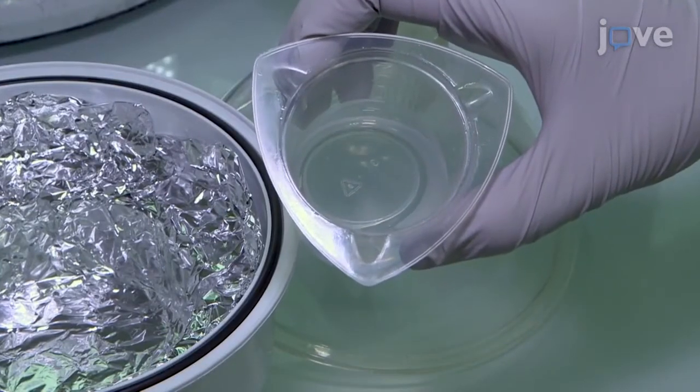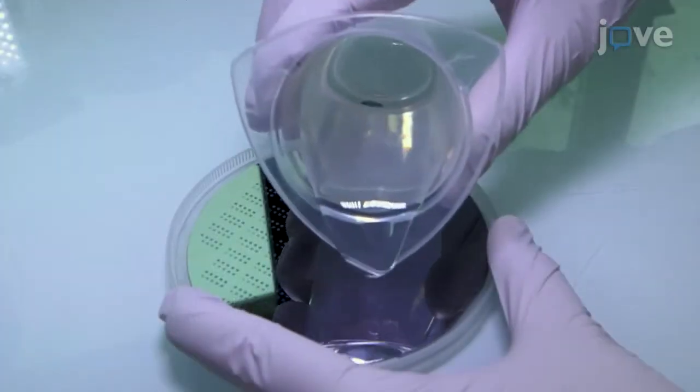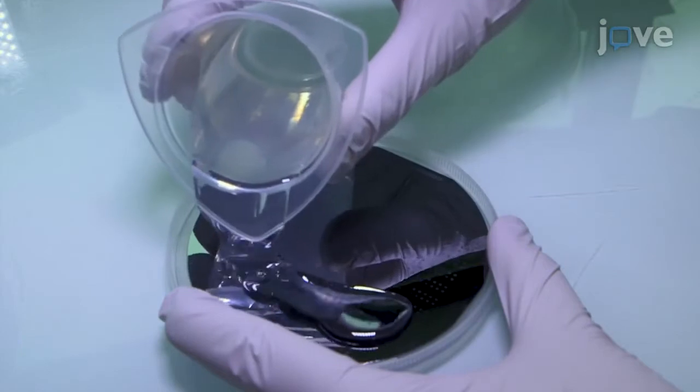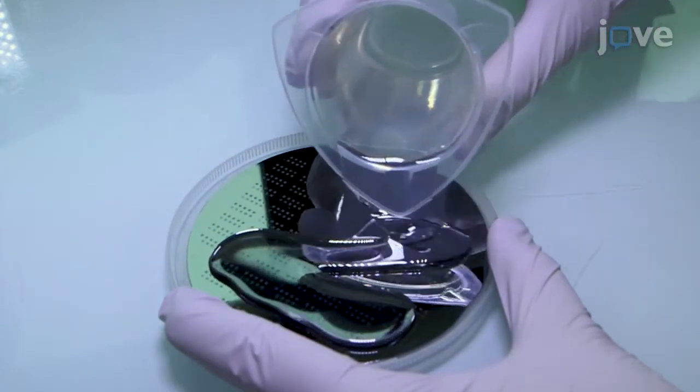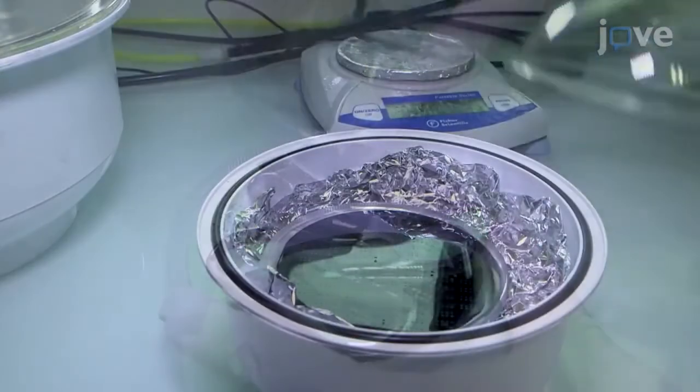When all of the trapped bubbles have been removed, pour 20 grams of the degassed solution onto a silicon master mold to a 2 to 3 mm thickness and degas again.